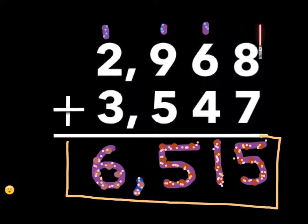In the ones place, eight plus seven is fifteen. And there's a five in the ones place, so you put the five in the ones place. And then the one goes in the tens place.